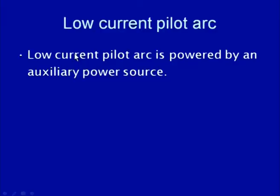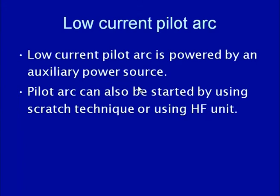The low current pilot arc is another approach where a low current is first supplied while contact is made with the base material to initiate the arc. Once the arc is initiated using the low current, the main power supply is brought into use to provide the required heat. The low current pilot arc is powered by an auxiliary power source delivering very small current. The pilot arc can be established using either a scratch technique or the high frequency unit, and this method is very reliable, efficient, and commonly used with direct current.